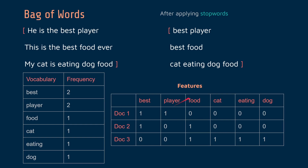So bag of words basically counts the number of occurrences of each vocabulary item within each document — we get the count right here in a table. There's also something called binary bag of words, which basically means that as long as the count is greater than zero, we cap it at one. So if the count for 'best' is two, with binary bag of words it will still be one, because we only care about whether there is an occurrence of 'best'.